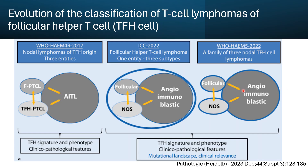This cartoon highlights the 2017, ICC 2022, and WHO fifth edition classifications. In the WHO fifth edition, we have three different entities under one umbrella term called nodal T follicular helper cell lymphoma. In ICC, we have one disease with three subtypes collectively named follicular helper T cell lymphoma — one entity with three subtypes versus a family of three different lymphomas.